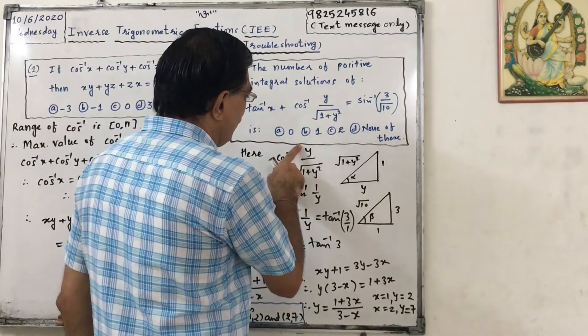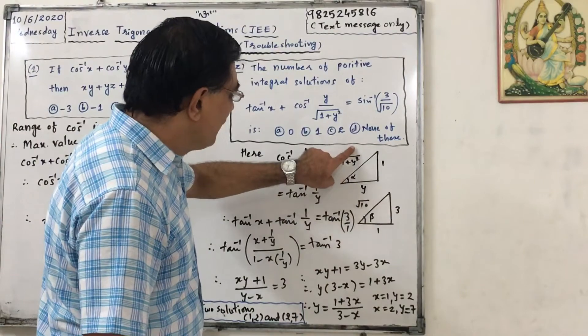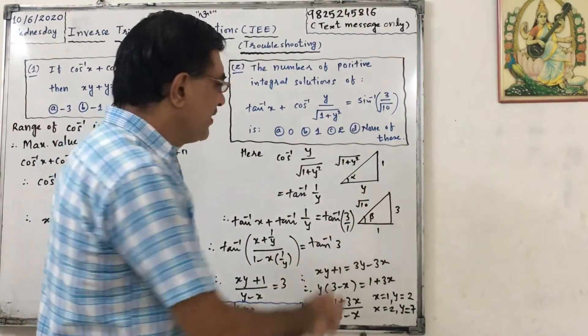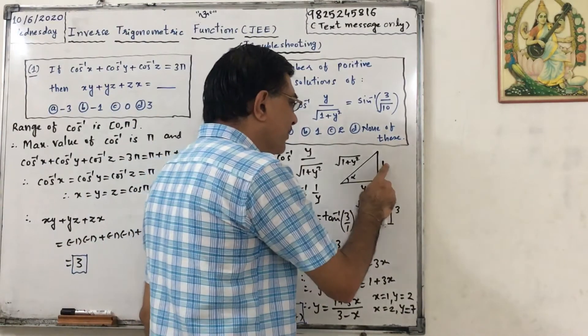Okay, so see cos inverse of y upon square root of 1 plus y square, so adjacent side upon hypotenuse. From this applying Pythagoras we can get here 1.